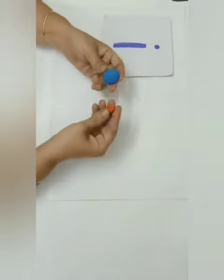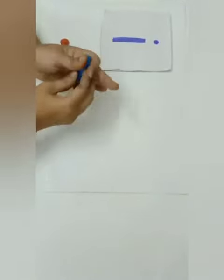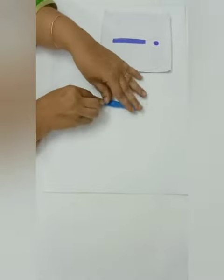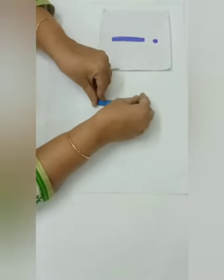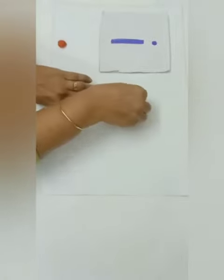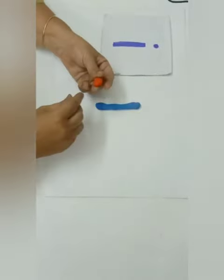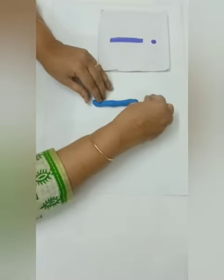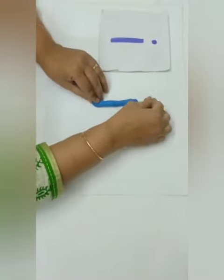Our third strategy is how to write E using molding clay. Take a piece of clay and roll it. Take another small piece and place it on the top of the straight line to make a dot.